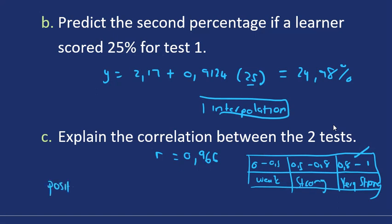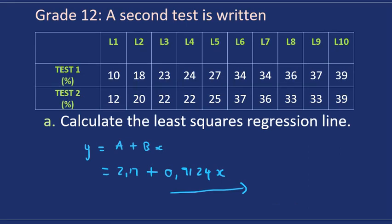It's positive and very strong. What that means is that the values are closely linked together. If we go back to our table, we can understand why the correlation is very strong. You see, 12 is not too far from 10, and 20 is not too far from 18. So the values are really strongly correlated. They're not too far off from each other. The values of the second test are not too far off from the values of the first test. That's what correlation tells us. Thank you, Grade 12s.